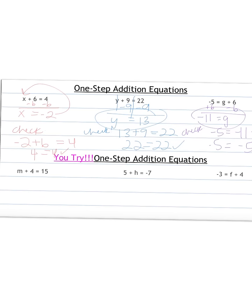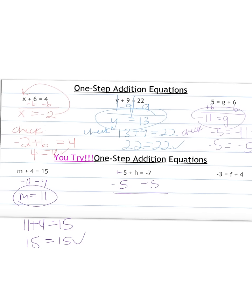A couple for you to try on your own, then come back and check. M plus 4 equals 15: subtract 4 from both sides — M equals 11. Plug back in: 11 plus 4 equals 15. So M equals 11. Next: 5 plus H equals negative 7. Subtract 5 from both sides because we have a positive 5, so the opposite is subtracting. H equals negative 7 minus 5, moving farther left to negative 12. Plug back in: 5 plus negative 12. They work, so H equals negative 12.